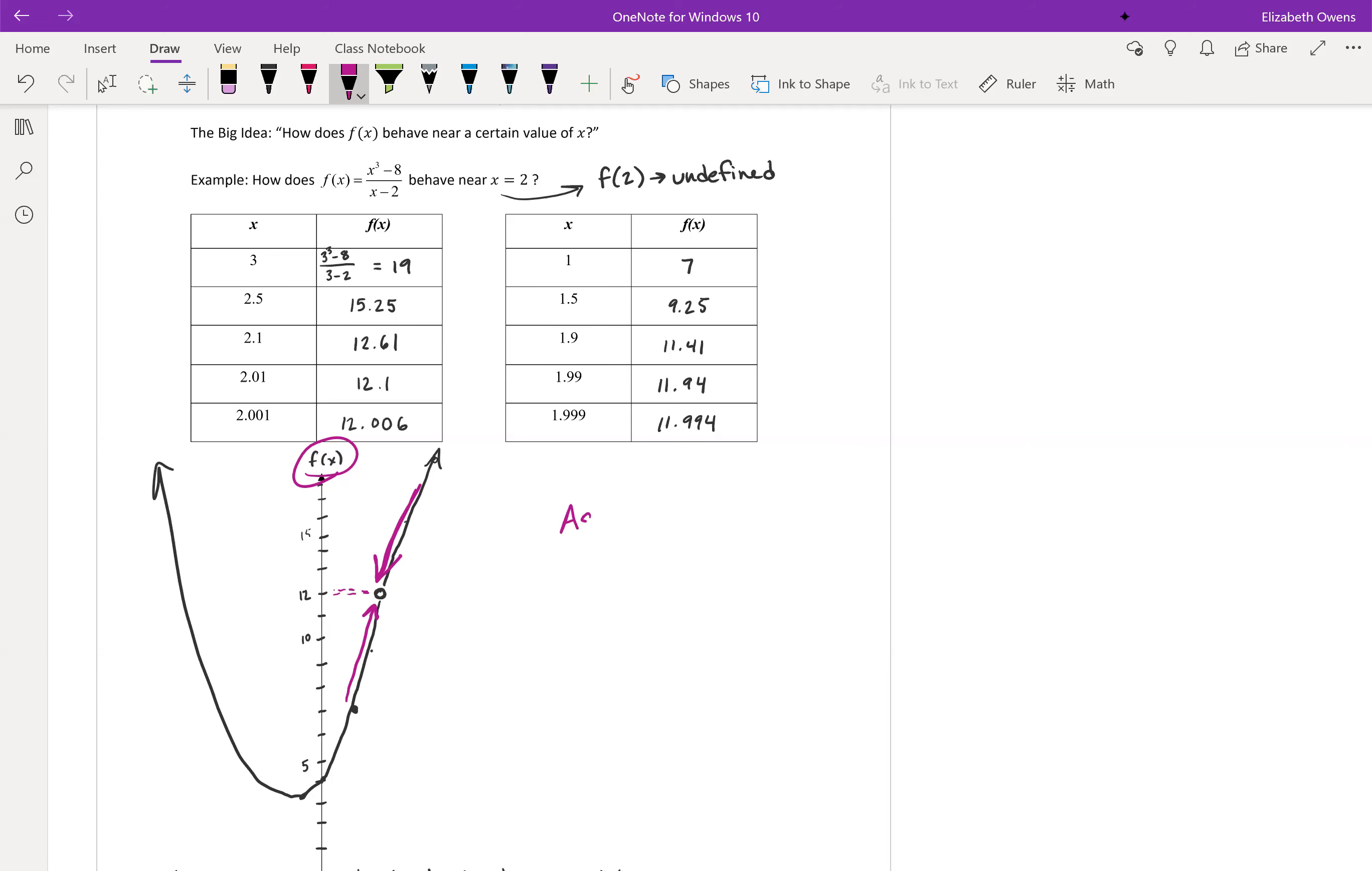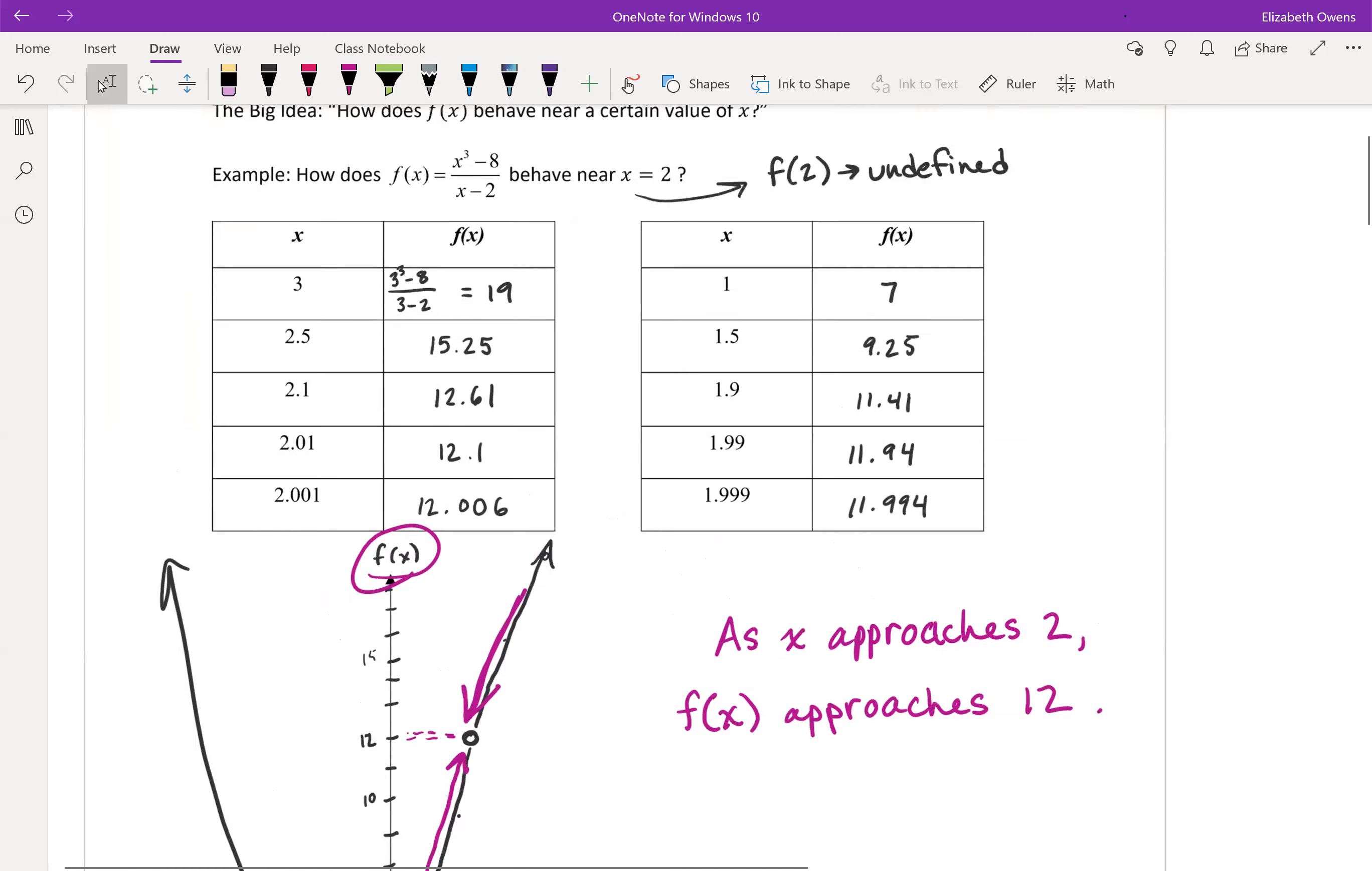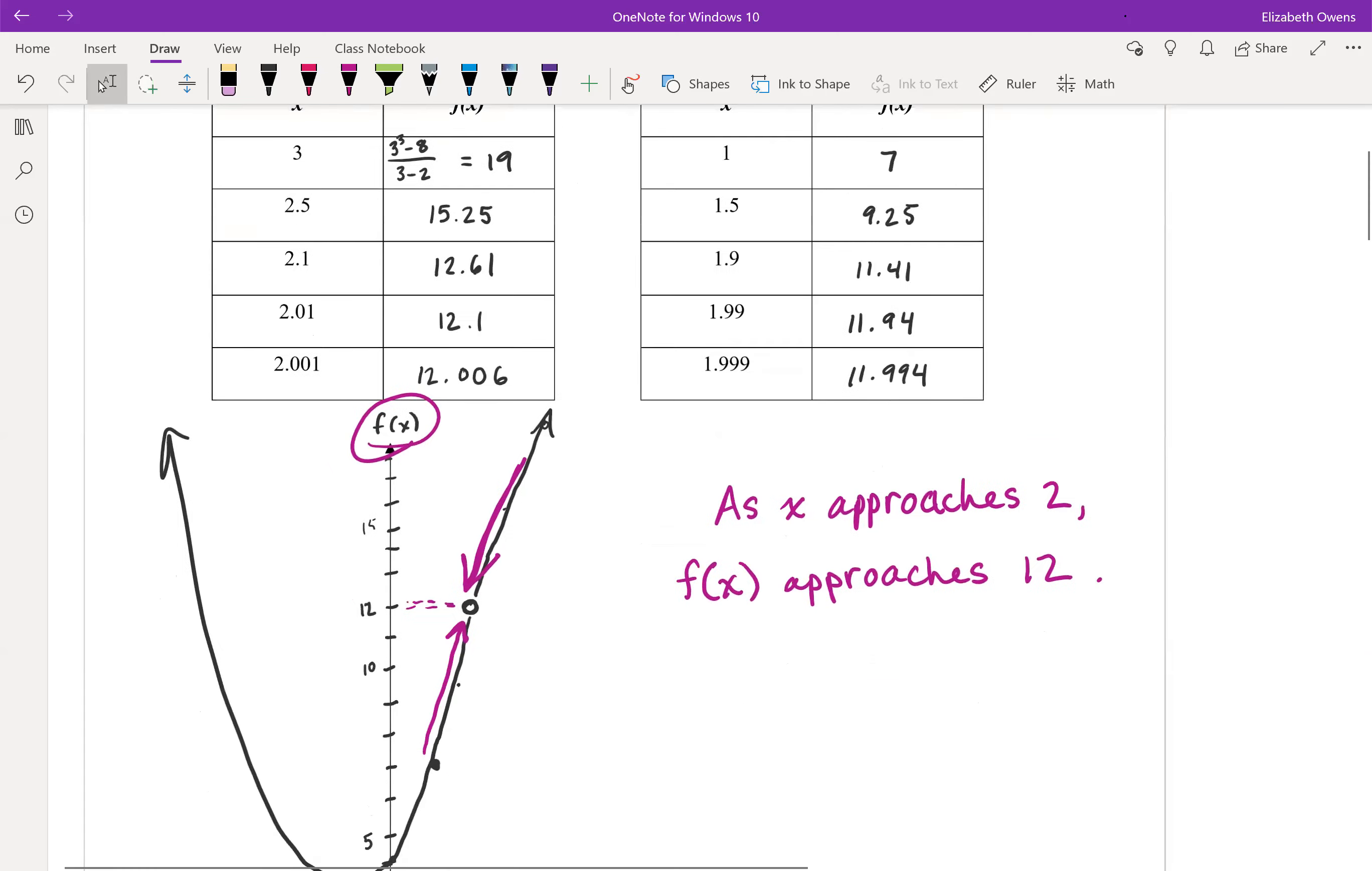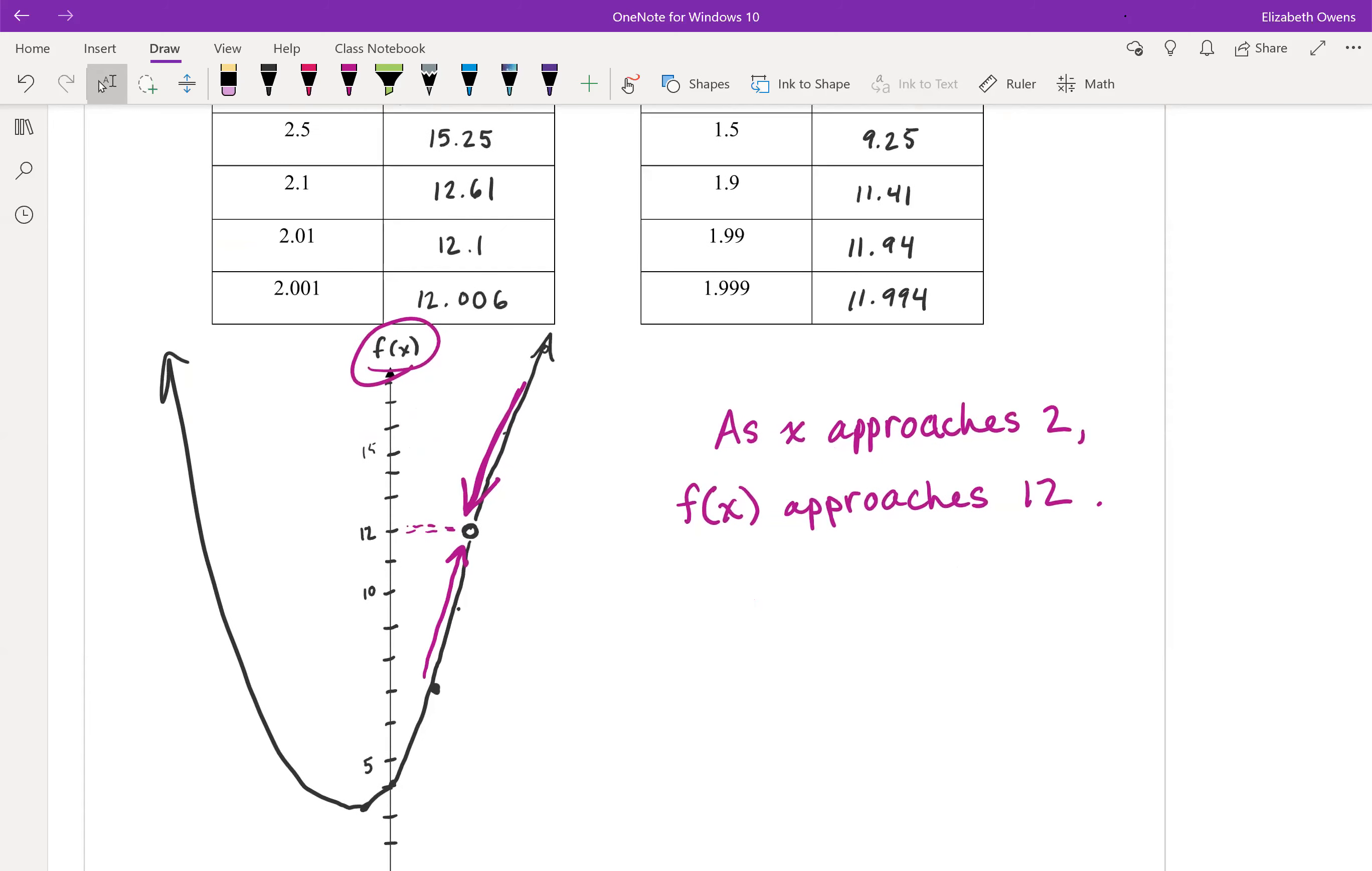Okay, so we could say as x approaches 2, like we were showing in our table with the x values, f of x, those values are approaching 12. Okay, so that's the conclusion for this problem. The function values approach 12 as x gets close to 2.